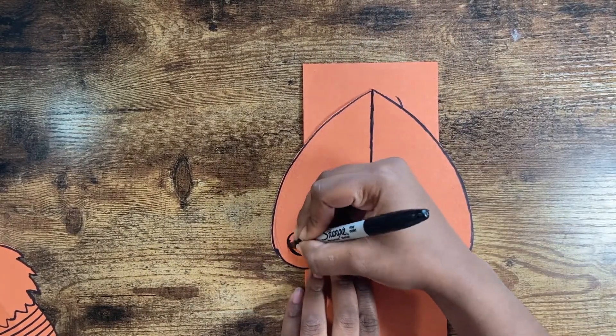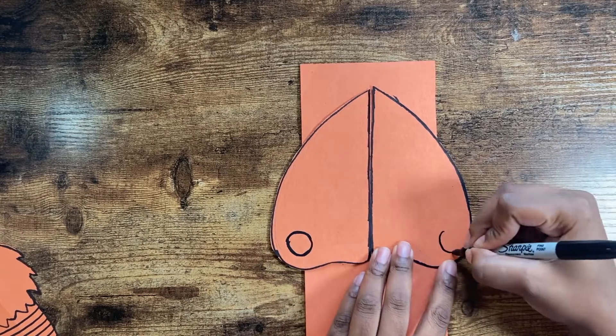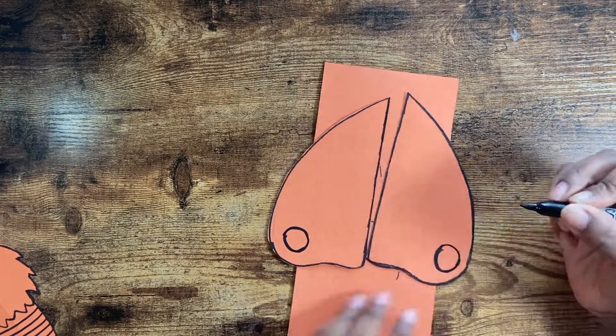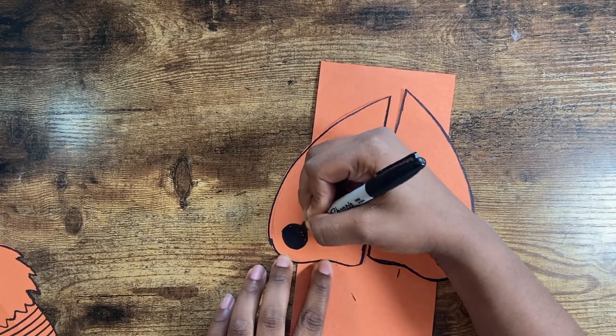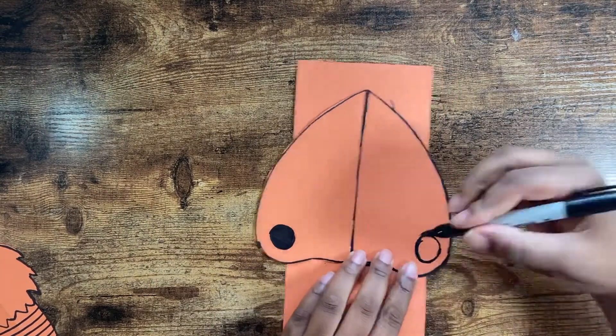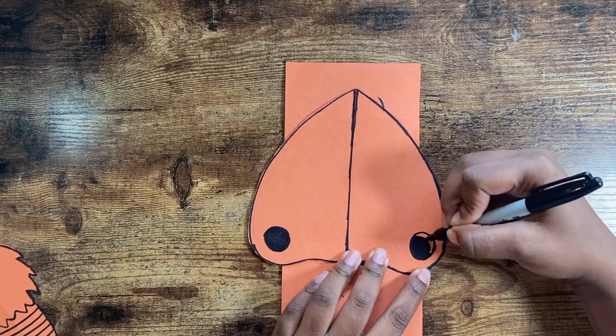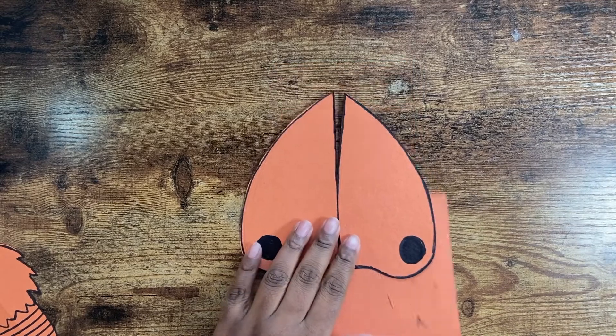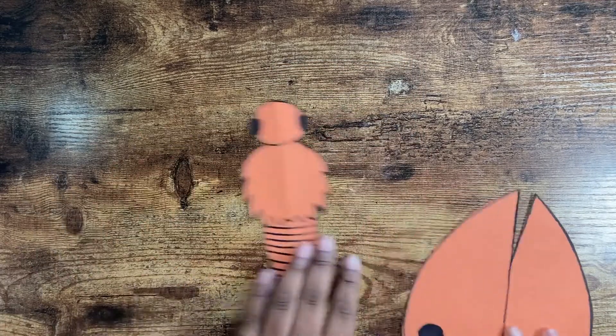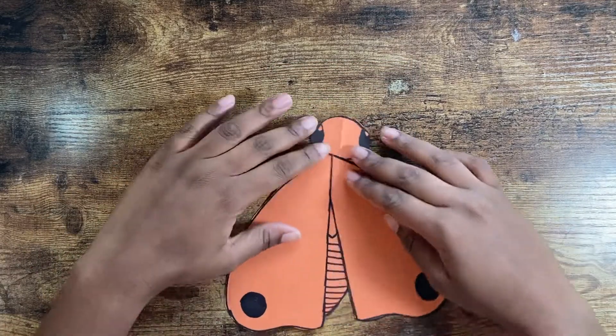All right, now we have two wings and you can do any pattern that you'd like. I just wanted to do something kind of simple and cute, so I'm just going to put two small circles in the bottom corners of each wing.